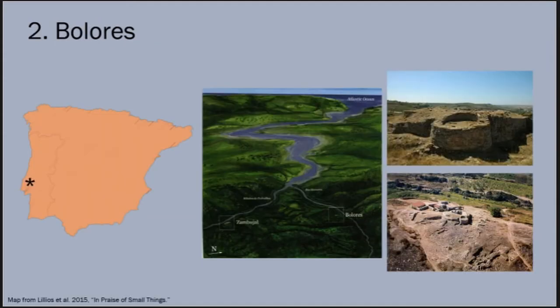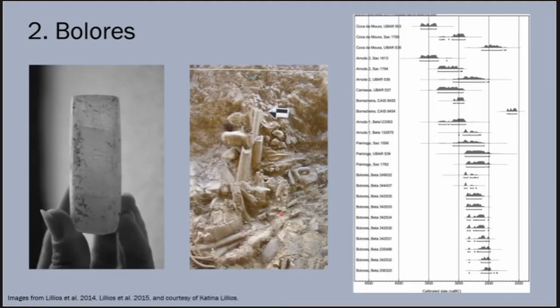The second site I'll describe is Bulores, an artificial mortuary rock shelter in Torres Vedras, Portugal, excavated by Katina Lilios and her team from the University of Iowa. Mortuary practices here entailed continual access to the rock shelter in order to ensure new human remains. Of the 11 radiocarbon dates from the site, 10 are clustered between 2800 and 2600 BC, while one individual dates to 1800 BC—almost a millennium later—suggesting an initial period of intensive deposition and a later mortuary reuse of the site during the early Bronze Age.